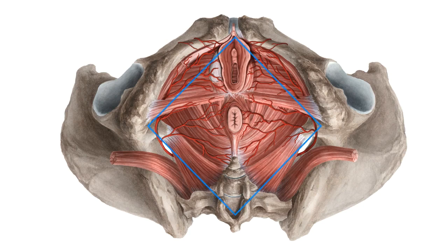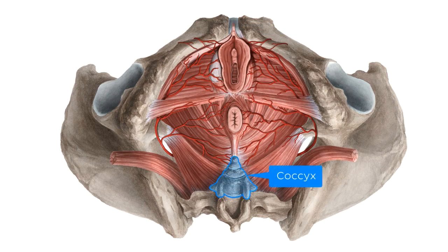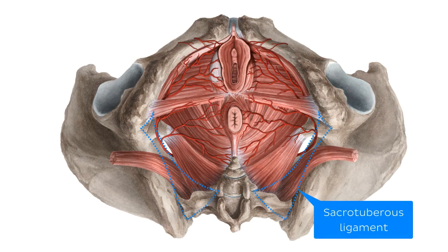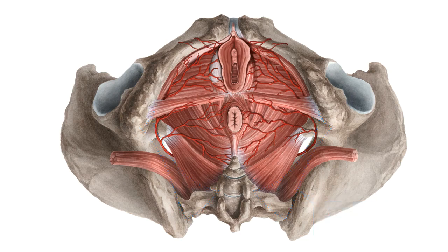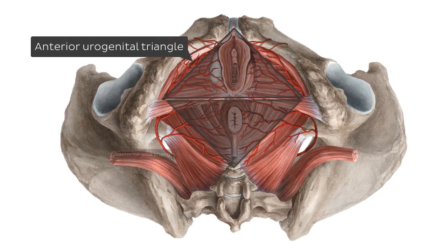As you can see in this image, the female perineum is an anatomical diamond-shaped region which is located below the pelvic floor and between the thighs. It's bounded anteriorly by the pubic symphysis and posteriorly by the coccyx, which is the little bit of bone inferior to the sacrum. Anterolaterally it's bounded by the ischiopubic rami, and posterolaterally by the sacrotuberous ligaments, which we can see dotted in blue, running from the ischial tuberosity to the sacrum. The female perineum can also be divided into two parts: an anterior urogenital triangle and a posterior anal triangle.